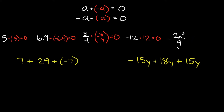Lastly, we have negative 2x cubed over 9. So the opposite of that would be positive 2x cubed over 9. So we're going to add positive 2x cubed over 9, and again your answer would be 0.